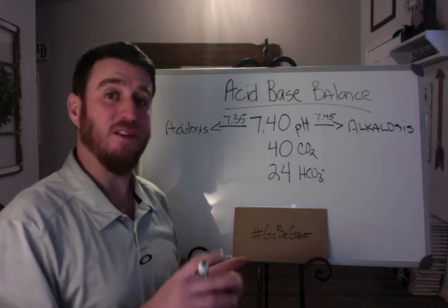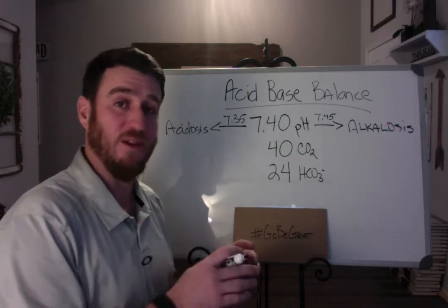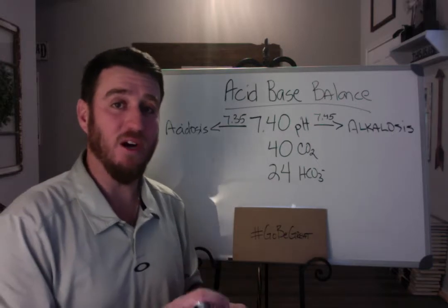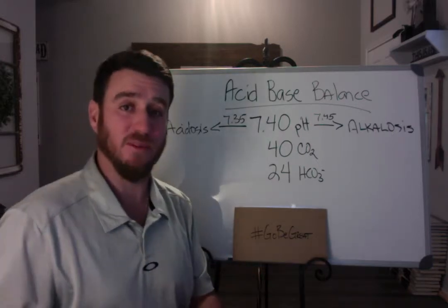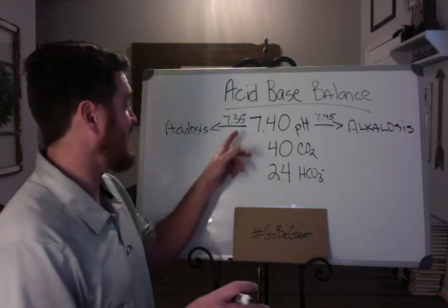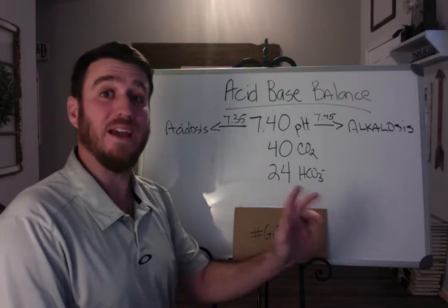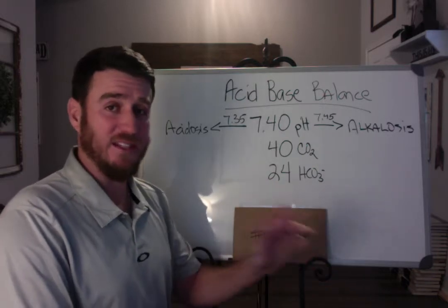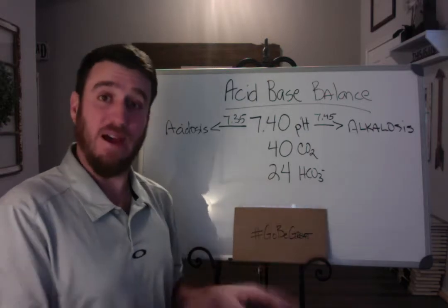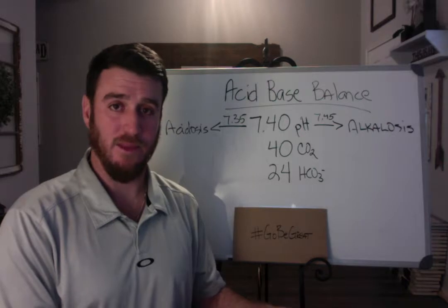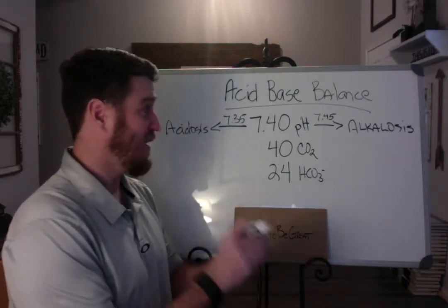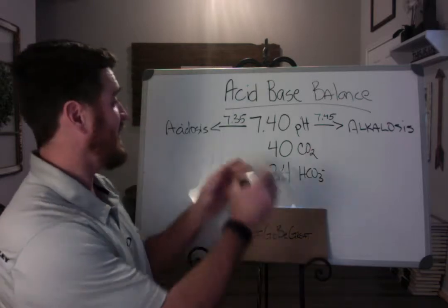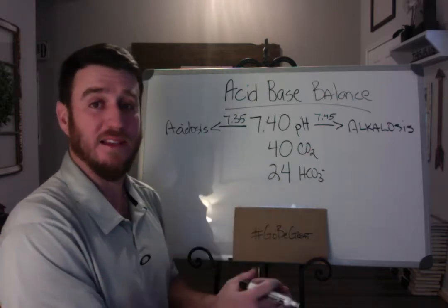Usually a pH of 7.35 to 7.45 is typically something you're okay with. I'm going to follow this video up with respiratory disturbances and metabolic disturbances specifically, because you can have somebody at a 7.35 or 7.36 that you recognize as going into a respiratory acidosis and you have to be able to pick up on that. Don't take away from this video that 7.35 is okay and not to worry about your patient — I'm not saying that. Anything greater than 7.45 is alkalosis; anything less than 7.35 is acidosis.